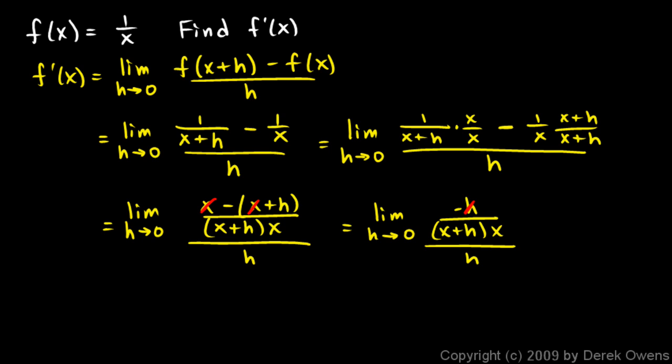And then mathematically, this h and this h will cancel out. And we're just left with a negative 1 on top.